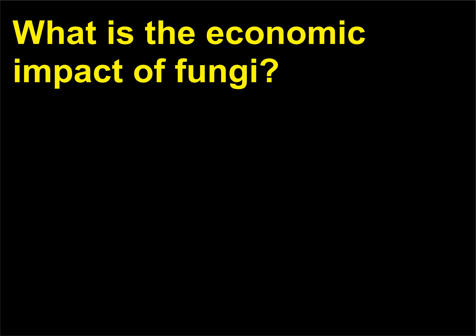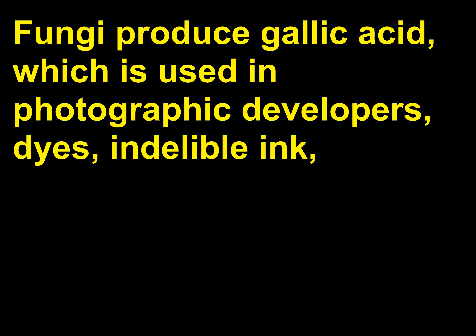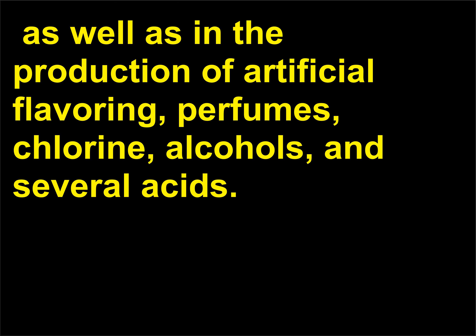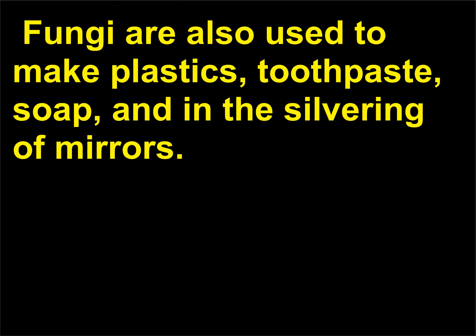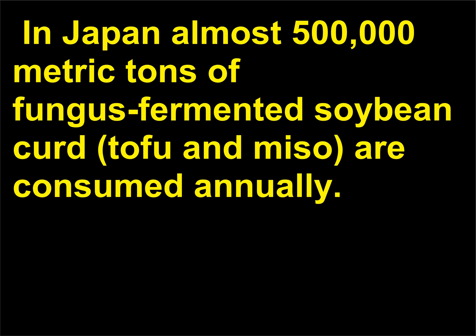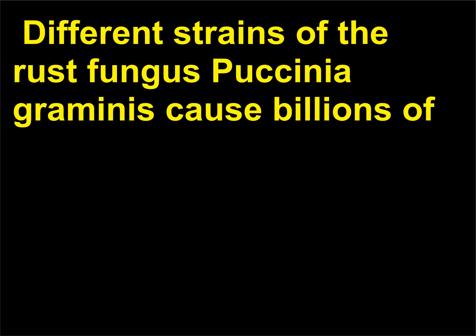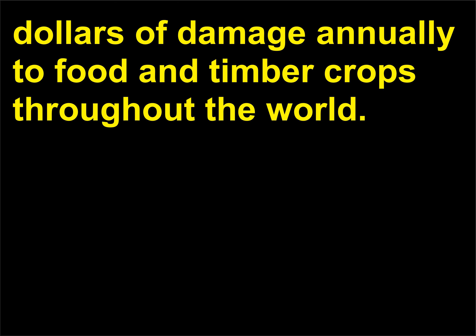What is the economic impact of fungi? Fungi produce gallic acid, which is used in photographic developers, dyes, and indelible ink, as well as in the production of artificial flavoring, perfumes, chlorine, alcohols, and several acids. Fungi are also used to make plastics, toothpaste, soap, and in the silvering of mirrors. In Japan, almost 500,000 metric tons of fungus-fermented soybean curd — tofu and miso — are consumed annually. Different strains of the rust fungus Puccinia graminis cause billions of dollars of damage annually to food and timber crops throughout the world.